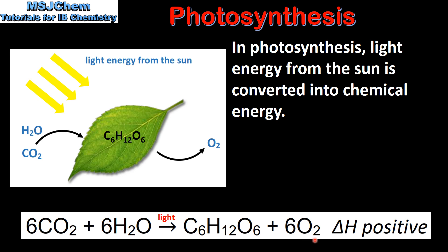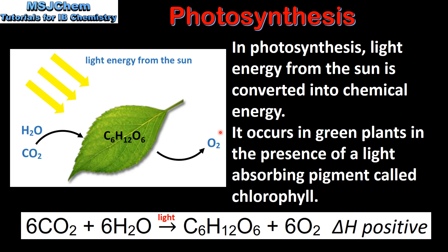Because photosynthesis is an endothermic process, the change in enthalpy — that's the delta H — is positive. Photosynthesis occurs in green plants in the presence of a light absorbing pigment called chlorophyll.